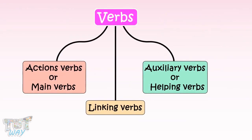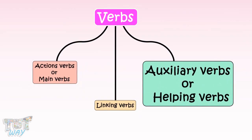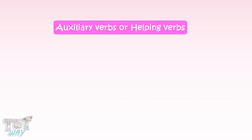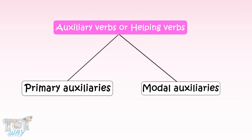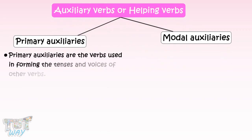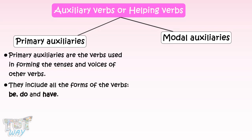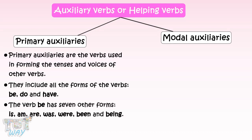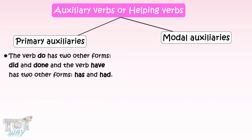Now we will learn the third type of verbs: auxiliary verbs, or helping verbs. They are divided into two types: primary auxiliaries and modal auxiliaries. Primary auxiliaries are verbs used in forming the tenses and voices of other verbs. They include all forms of the verbs be, do, and have. The verb 'be' has seven forms: is, am, are, was, were, been, and being. The verb 'do' has two other forms: did and done. And the verb 'have' has two other forms: has and had.